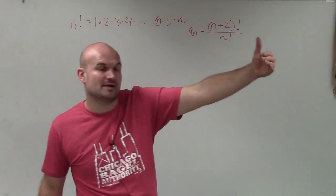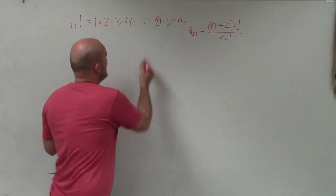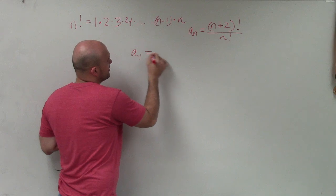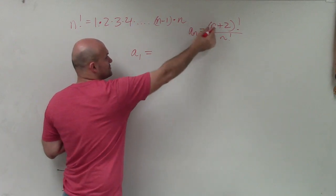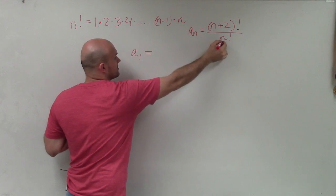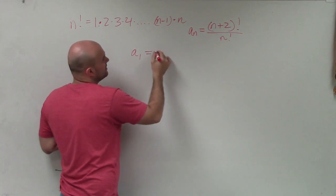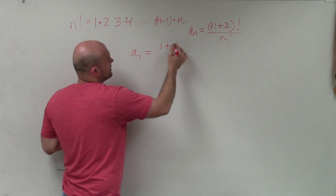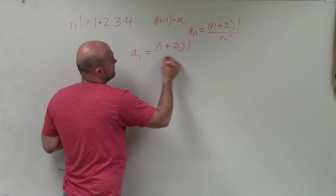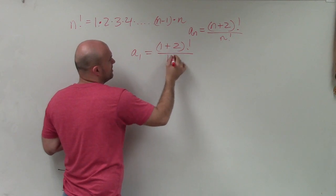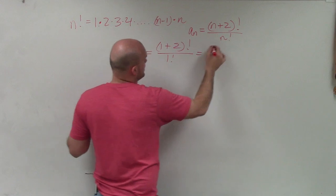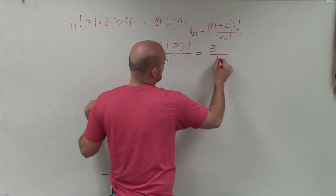So it's all the previous terms all the way up to your value. But what's nice about this is I want to evaluate a sub 1. So wherever n is, that's where n's in the sequence. So if I plug in 1, I'm simply going to plug in a 1 there. So I have 1 plus 2 factorial divided by 1 factorial.